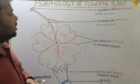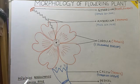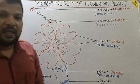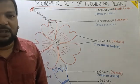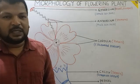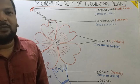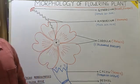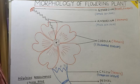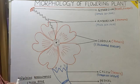Now we will see a typical angiospermic flower, that is Hibiscus rosa-sinensis — also known as China rose. Hibiscus rosa-sinensis is the botanical name, or scientific name, or biological name of China rose.